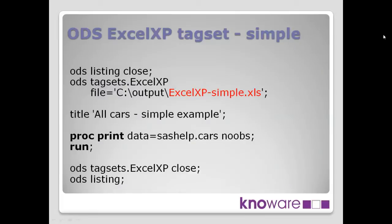Let's look at the code. The first statement here is closing off any existing output — we don't want it to go to the default destination. We want to control the output to go to the XLXP destination. We tell it which file we want it to go to; here we're creating a file called xlxpsimple.xls. Note we're creating it with a .xls name — even though we know this is an XML file — so Excel knows to open it and will determine it's XML format and handle it appropriately. Then the same simple code as used in previous sessions: we put a title on, we do a proc print to get the resulting output. At the end, we close off the XLXP destination to free up the file, then any remaining SAS code goes to ODS listing, the default output location.